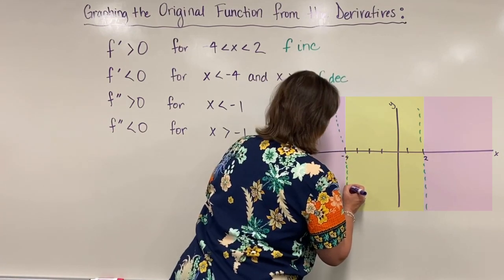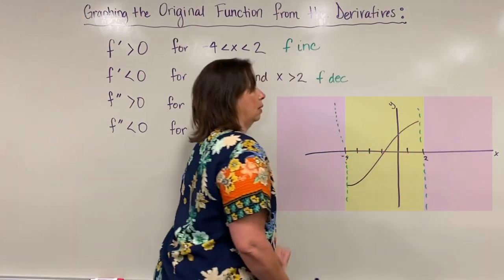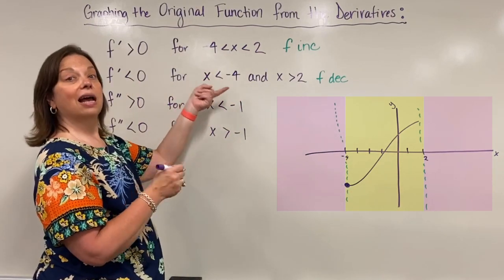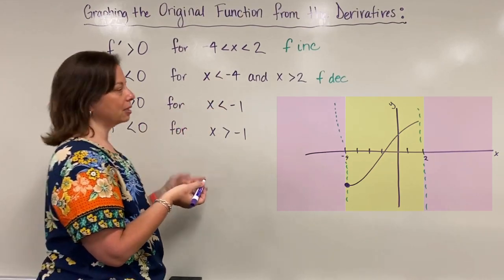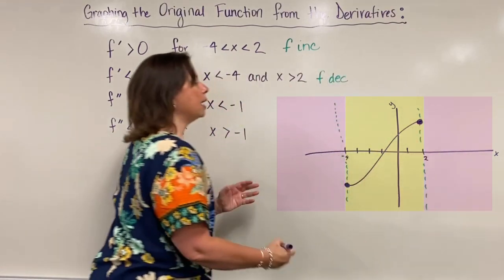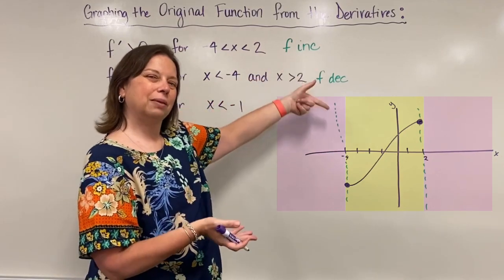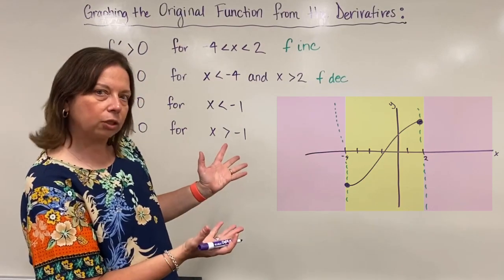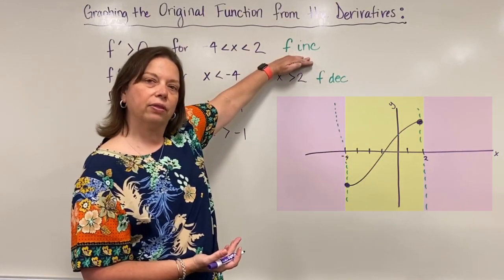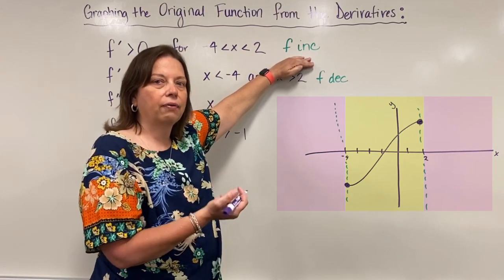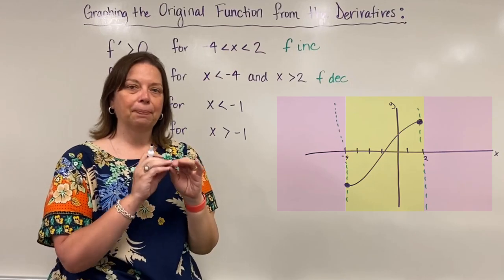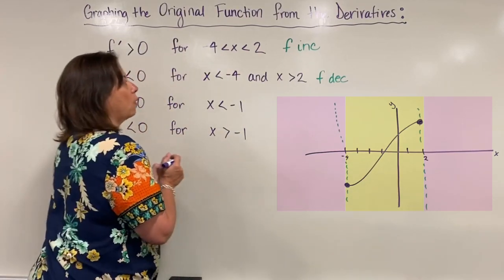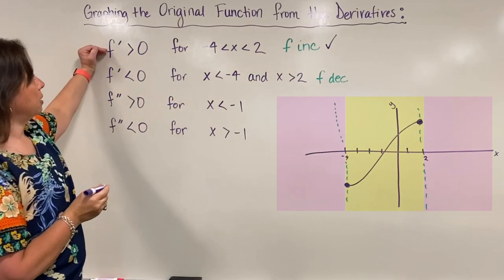I'll draw the graph increasing from the dashed line at negative 4 to the dashed line at 2. At negative 4, something special is happening — rather than increasing, the function will now decrease. Similarly at x = 2, it's a special value where I transition from increasing back to decreasing. I want to confirm that what I've drawn is always increasing in that zone, which it is.